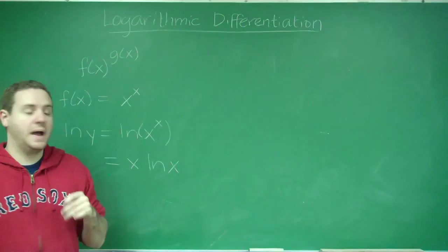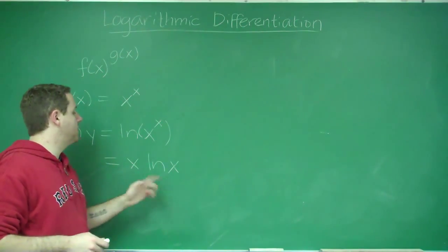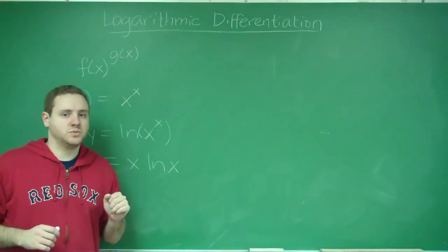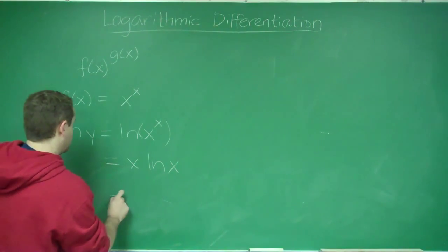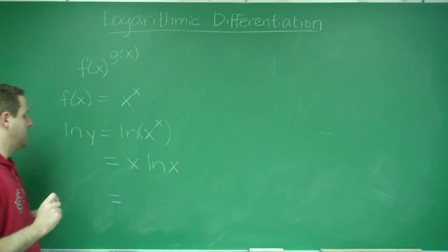Now we don't have a variable to a variable power. And if we wanted to do the derivative of this, we could just do the product rule.